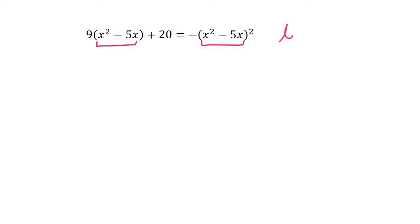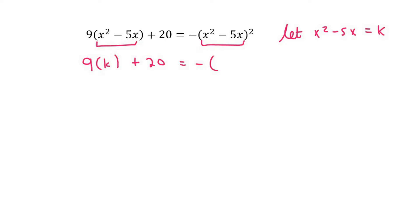So we then say: let x² minus 5x equal to k, and so we replace everything — or that part — with k. See what I did? I just replaced it with k; I didn't change any brackets or anything like that.